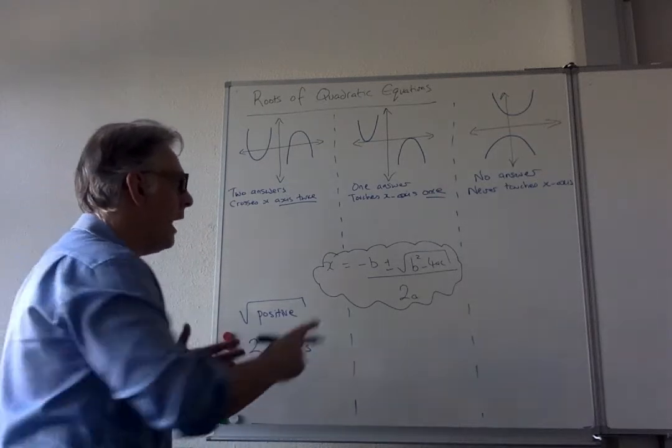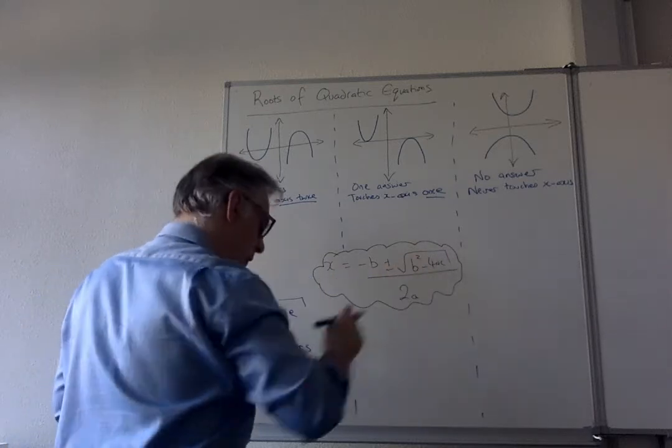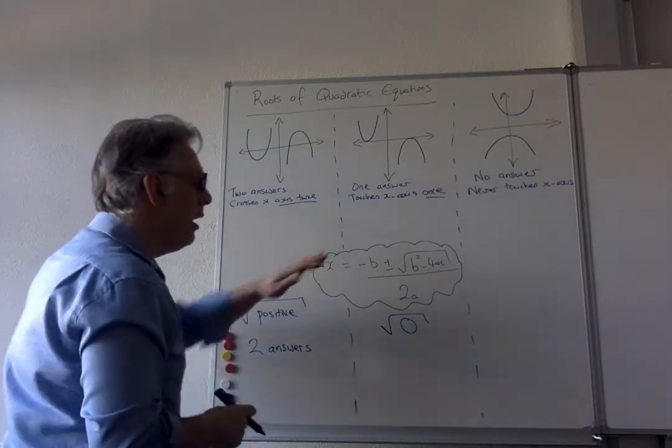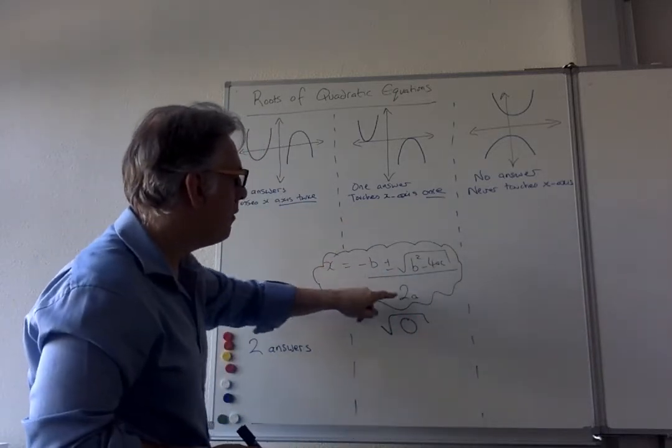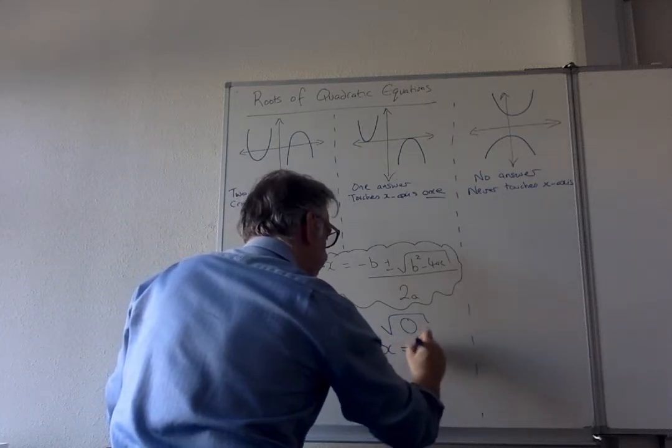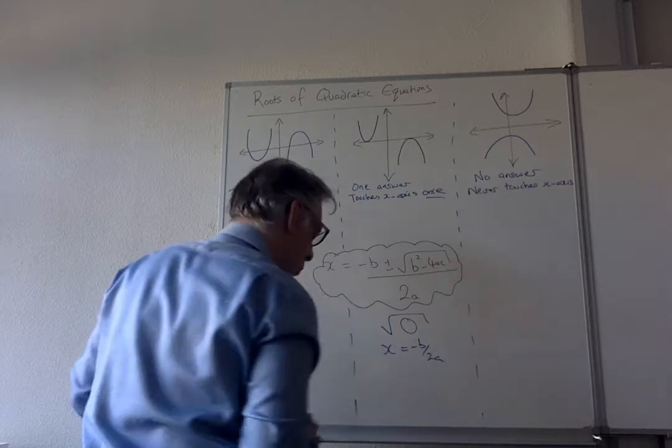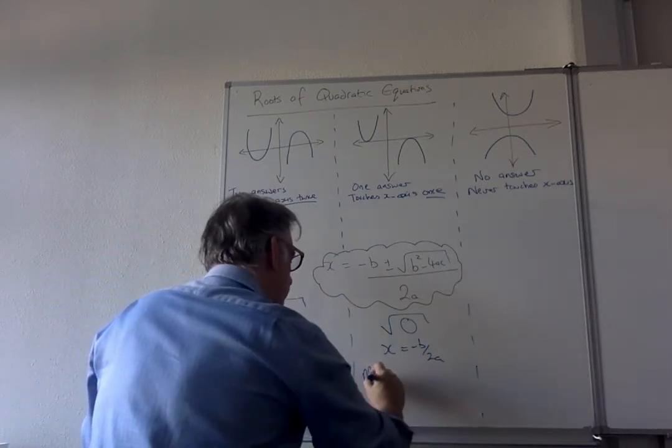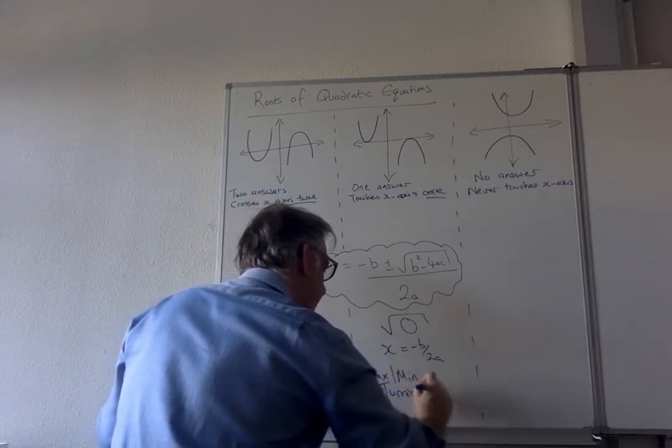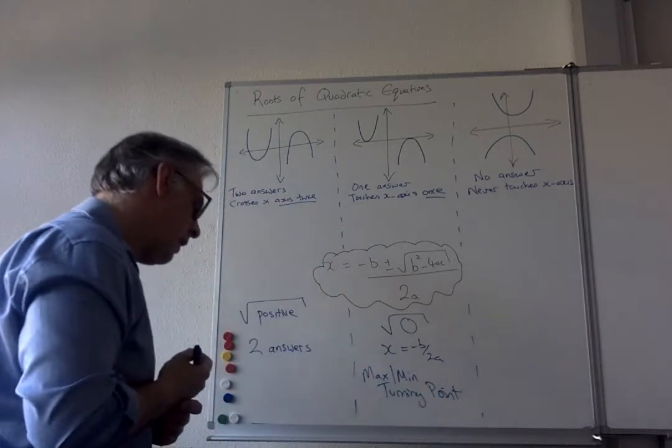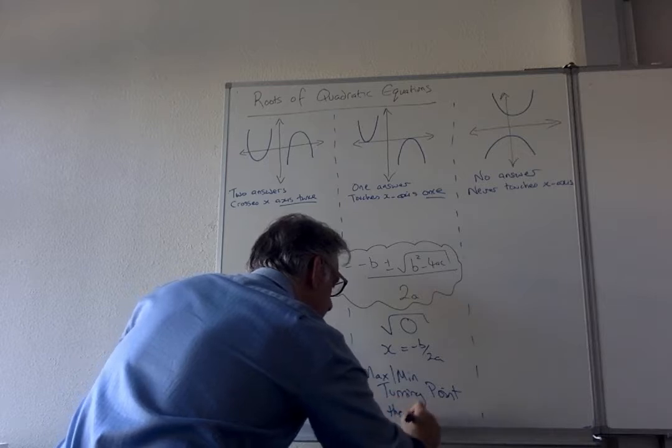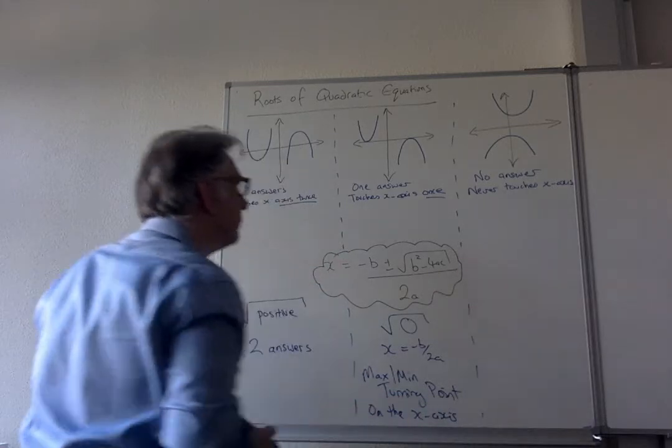When we only had one answer, the b squared minus 4ac, that part inside there was equal to zero. So that part disappeared and you've just got minus b over 2a is the answer. So you just get the one answer. But that is also the maximum or the minimum turning point, and it's going to be on the x-axis.